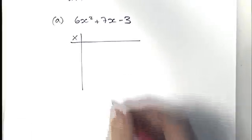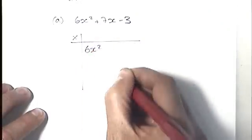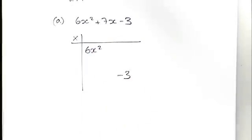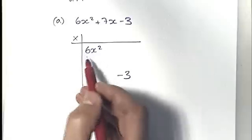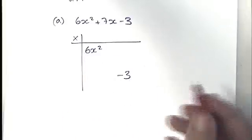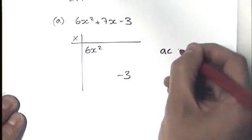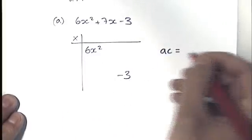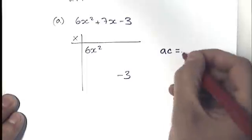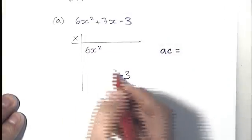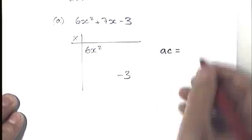So what we can fill in on the grid immediately are those two numbers there, the value of a being 6 and the value of c, which is negative 3. And the first thing that you want to do, this is the magic bit, is to multiply a times c, a being 6, c being negative 3.